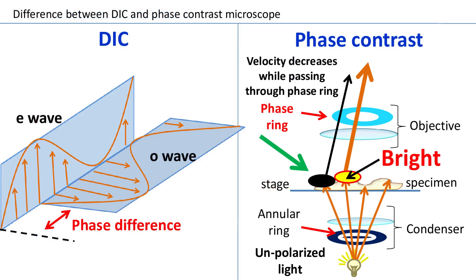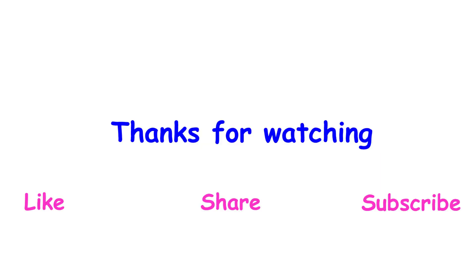Hence remember: in phase contrast microscopy, the phase difference between light rays results in destructive interference, which gives rise to dark areas of the image. In DIC, the phase difference between two polarized waves — the E wave and the O wave — gives rise to elliptically polarized light, which passes through the analyzer and is observed as a bright region. So phase contrast microscopy and DIC microscopy are completely different — do not mix them up. I hope DIC and phase contrast microscope are clear by now.